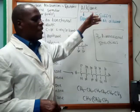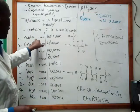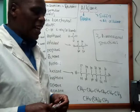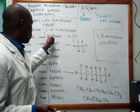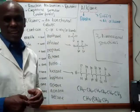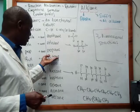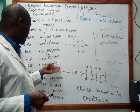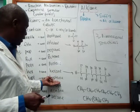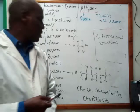Nine carbon atoms: 'non'. Ten carbon atoms: 'dec'. The suffix will be '-ane'. So 'meth' plus '-ane' gives you 'methane'. One carbon atom: methane. Two carbon atoms: ethane. Three carbon atoms: propane. Five carbon atoms: pentane. Six carbon atoms: hexane. Seven carbon atoms: heptane. Eight carbon atoms: octane. Nine carbon atoms: nonane. Ten carbon atoms: decane.